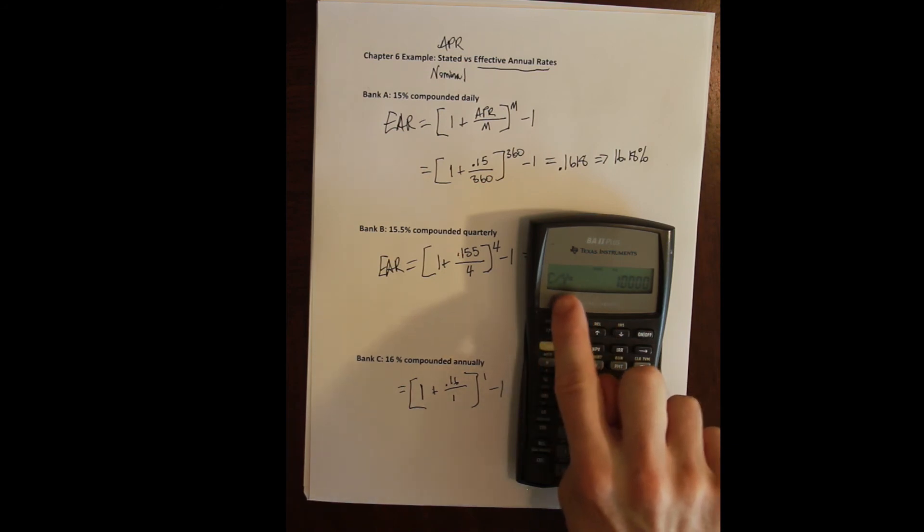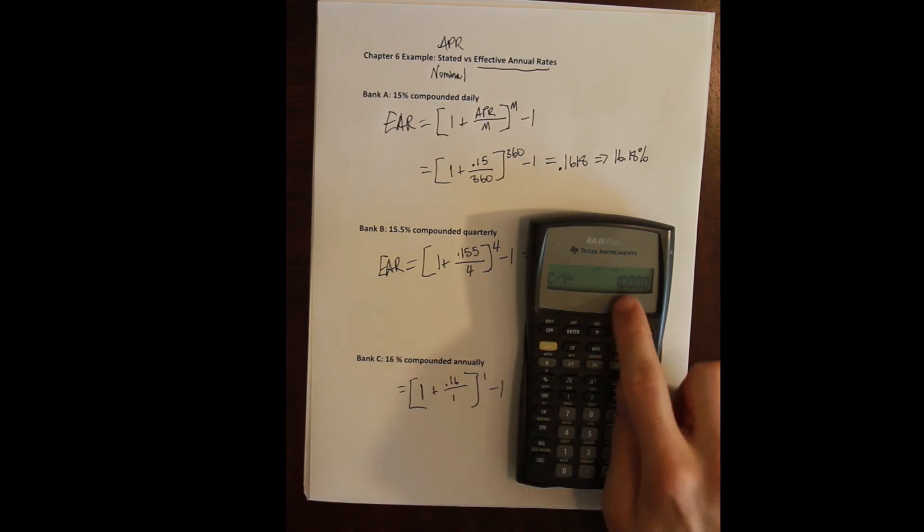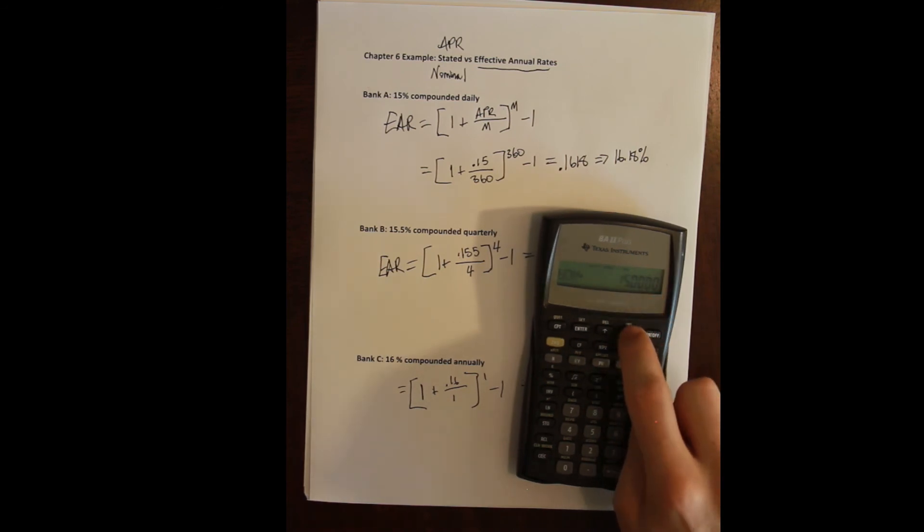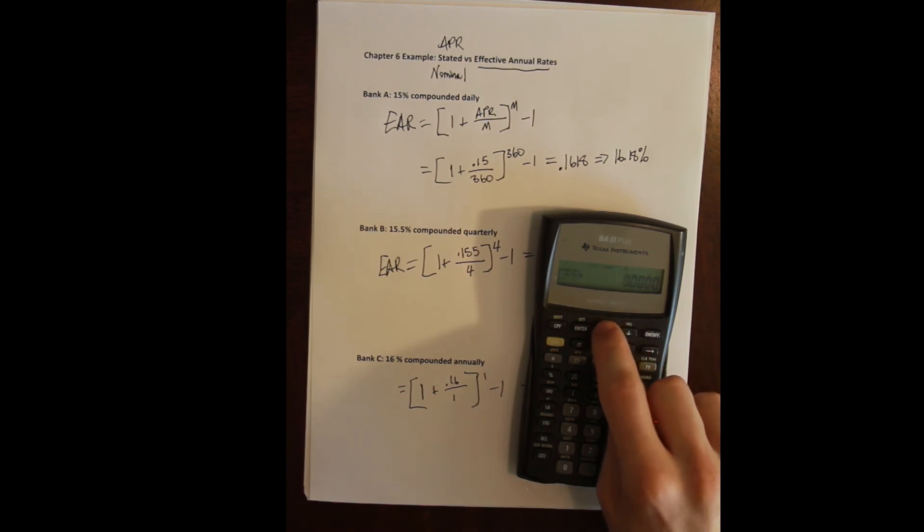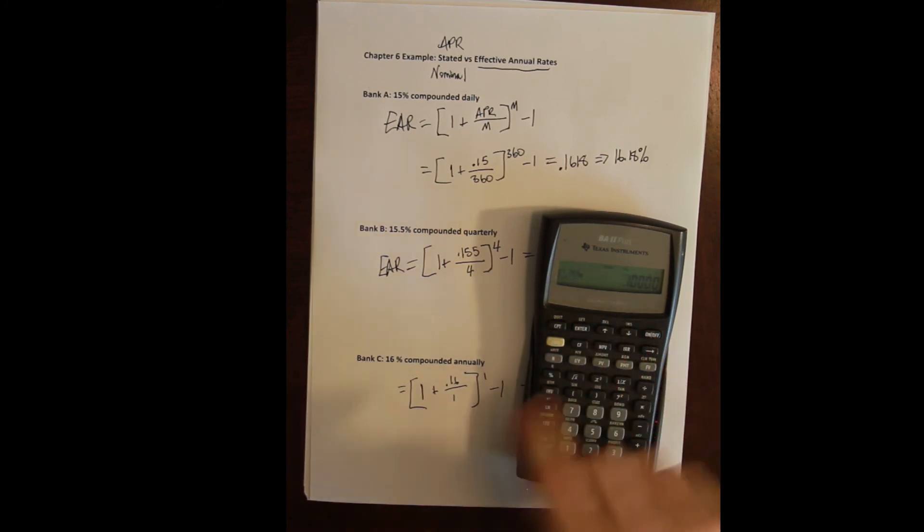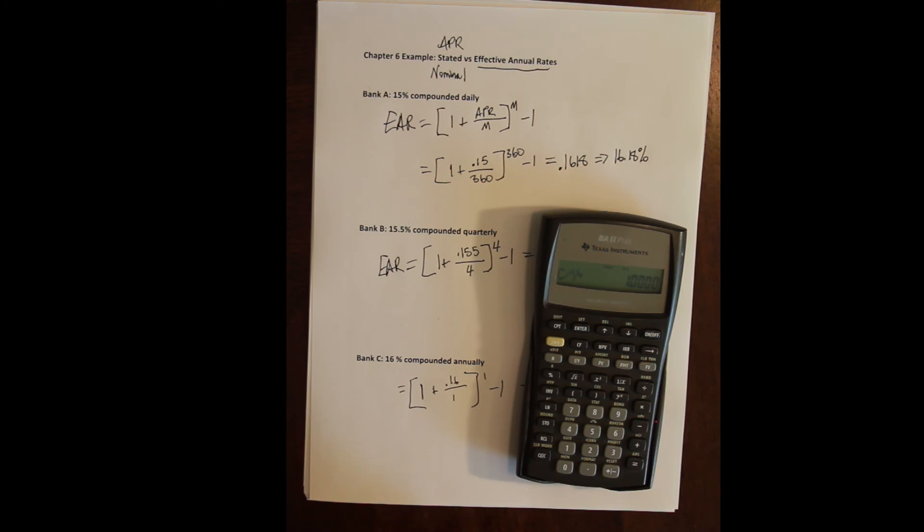I press down again and I'm in NOM, so there's only three inputs in this environment. Pressing down or pressing up gets you to all of them. I go to my cash flows per year because that's the only input I have. I type 360 and I press enter. Then I can press up again and that's effective, effective rate is what I'm trying to solve for, the effective annual rate.